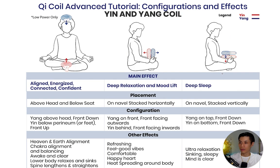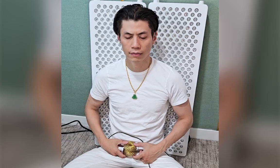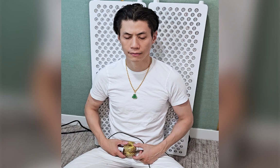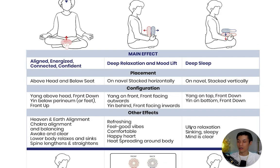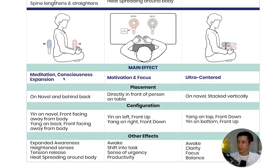The next configuration is really great for deep sleep. Stack the coils vertically with the yang on top front facing down and the yin on the bottom front facing down. You can hold it in front of your navel, or place it on your desk or on the floor in front of you. Other effects include ultra relaxation, sinking, and feeling sleepy but with a really clear mind.